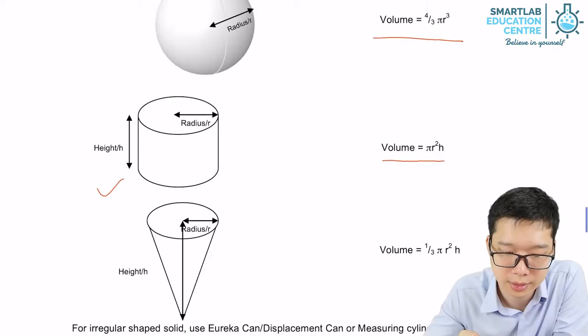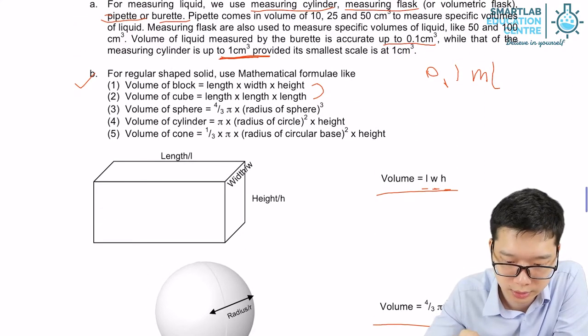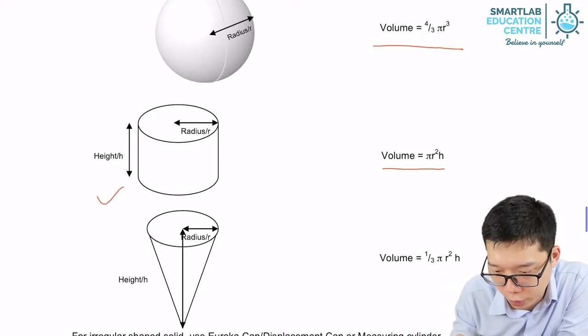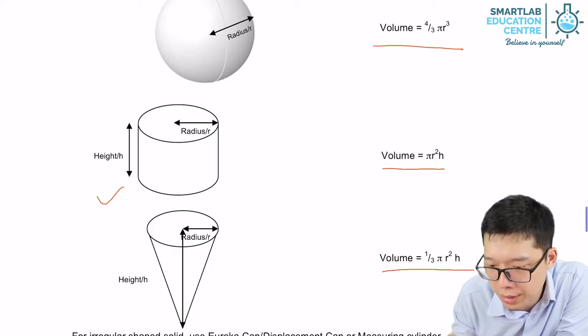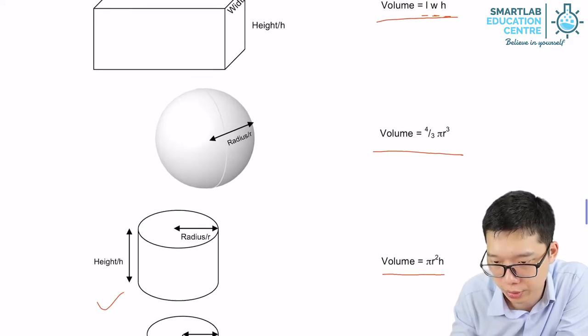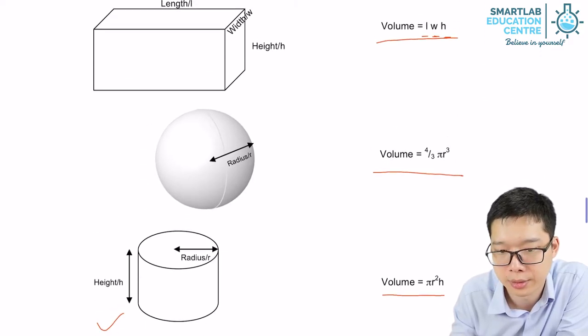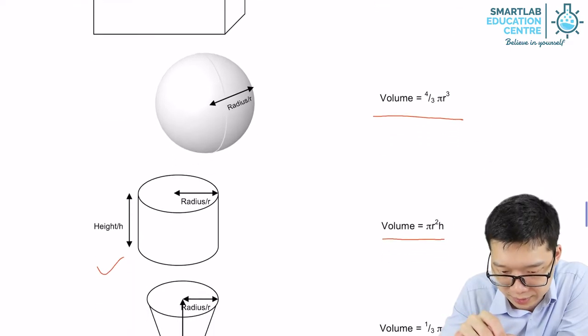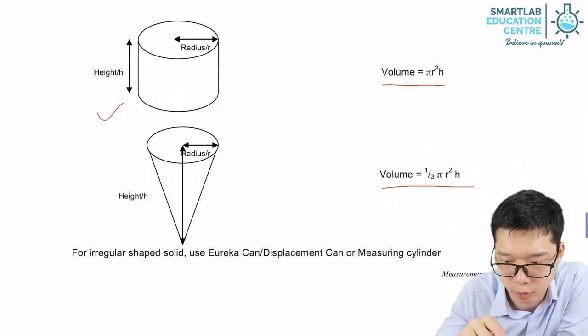And the last regular shape, which is a cone. The volume of a cone is 1 third pi r squared h. So these four formulas, these four new formulas, you have to remember for cube or block, for sphere, for cylinder and for cones.